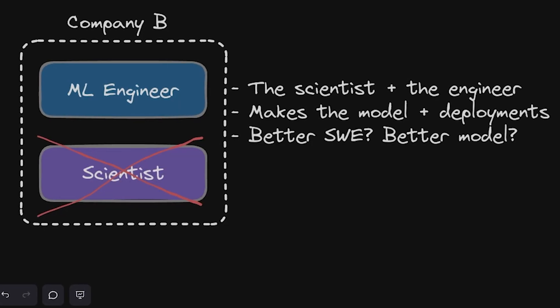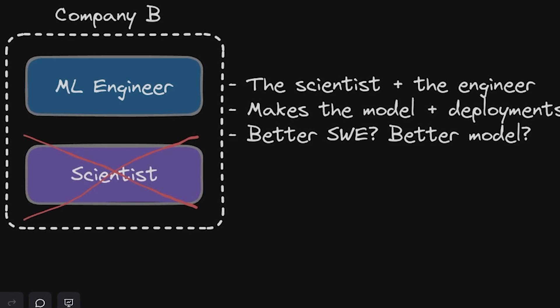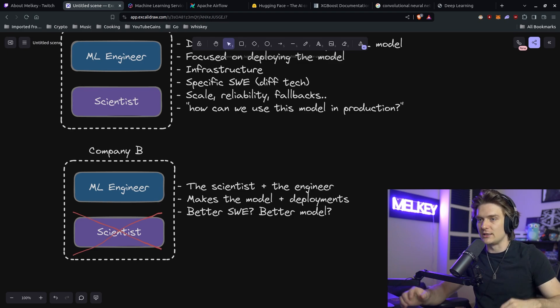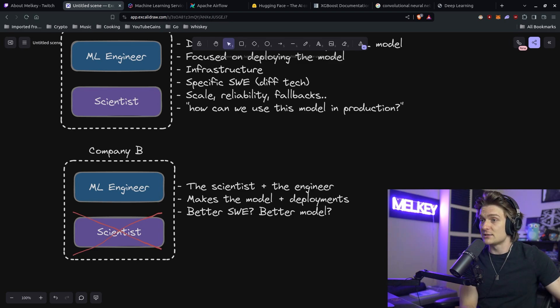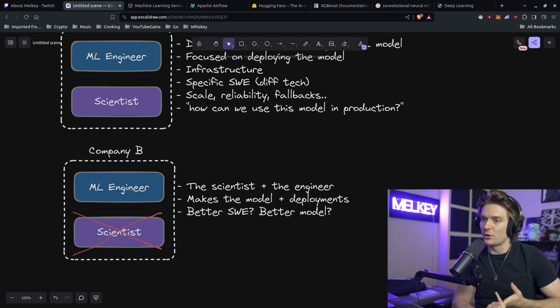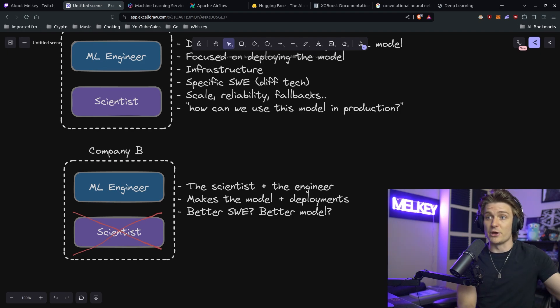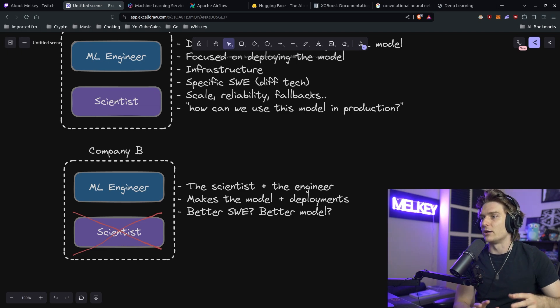Then we have Company B, or companies that follow the pattern of B, where there is no separation between scientists and engineers. It's just the machine learning engineering role — one role that is both the scientist and the engineer. They're responsible for training the model, creating the model, the data pipelines, deploying it, and everything we just talked about. The question is whether a strong scientist good at training models, or a strong software engineer crafty at deploying software, makes for the better fit. That's kind of where the line gets blurred.